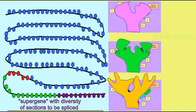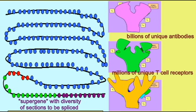Because there are so many different gene sections, this produces enormous possible combinations when these sections are joined in different ways. This is how the body generates such diversity of antibodies and T cell receptors.